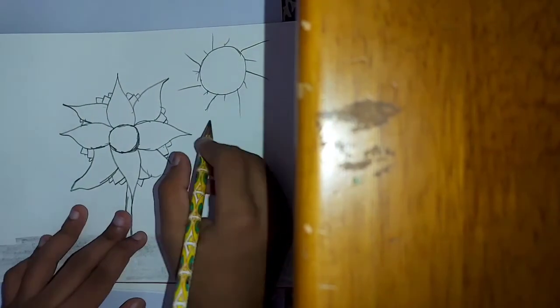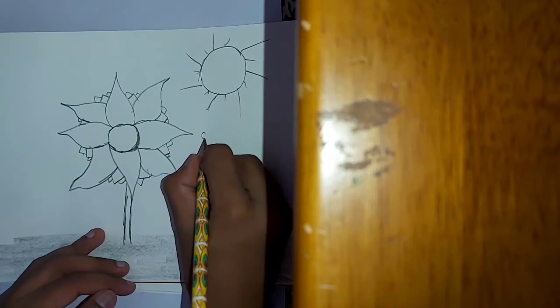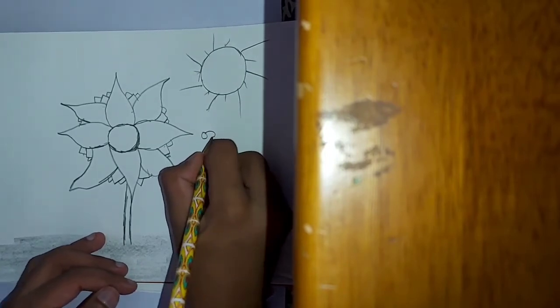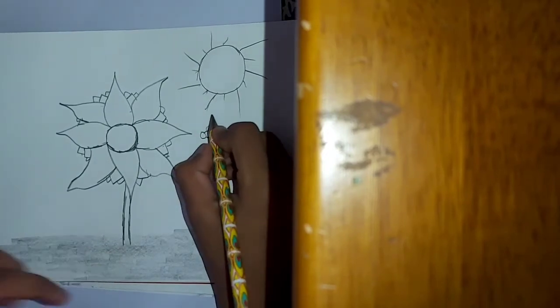Now let's do some bees. Let me draw a small circle and do like this, and for the wings we draw like this.